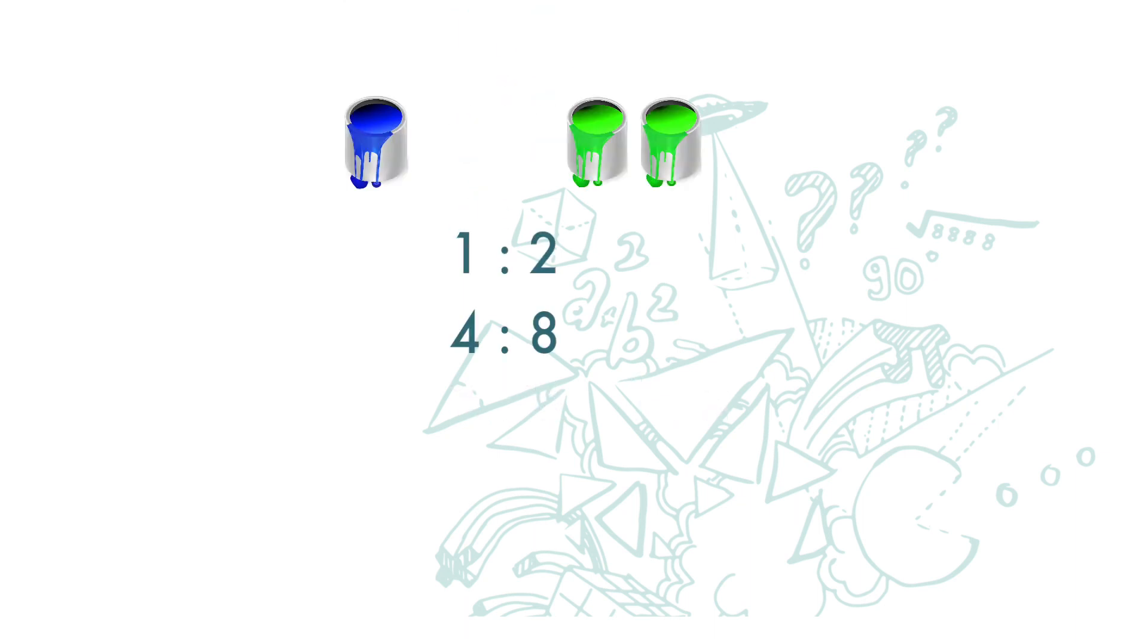We can also look at equivalent ratios in this way. The ratio of 1 tin of blue paint before to 4 tins of blue paint after is 1 to 4. The ratio of 2 tins of green paint before to 8 tins of green paint after is also 1 to 4. These two ratios are also the same.